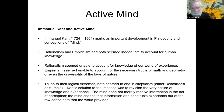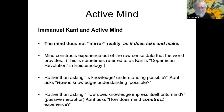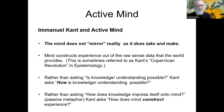The mind does not merely receive information in the act of perception — the mind shapes that information and constructs experience out of the raw sense data that the world provides. The mind does not mirror the world, but rather takes and makes the world of our experience. This is sometimes referred to as Kant's Copernican revolution in epistemology. Rather than asking how knowledge impresses itself onto the mind, Kant asks how the mind constructs experience.